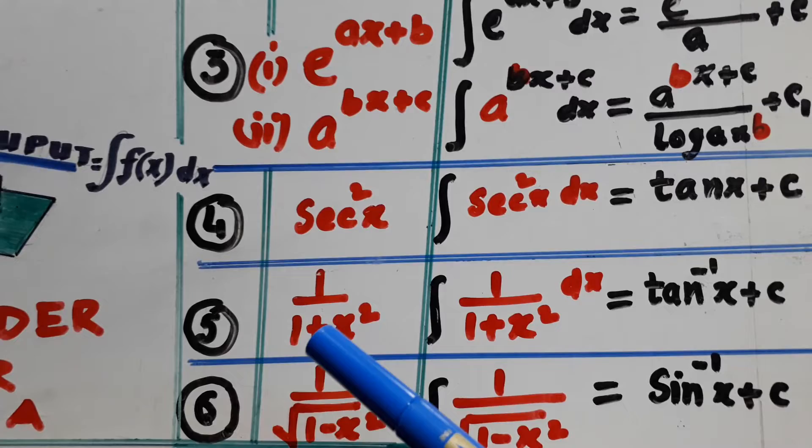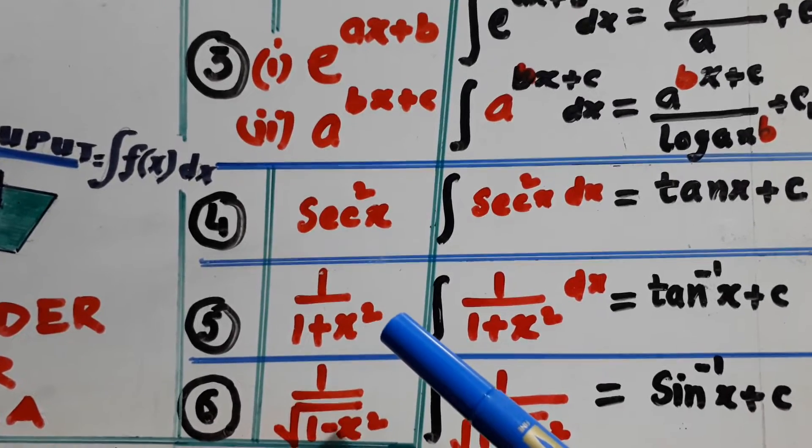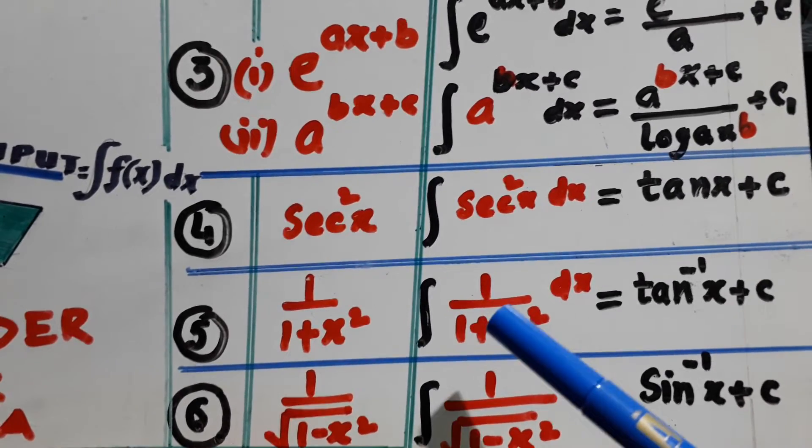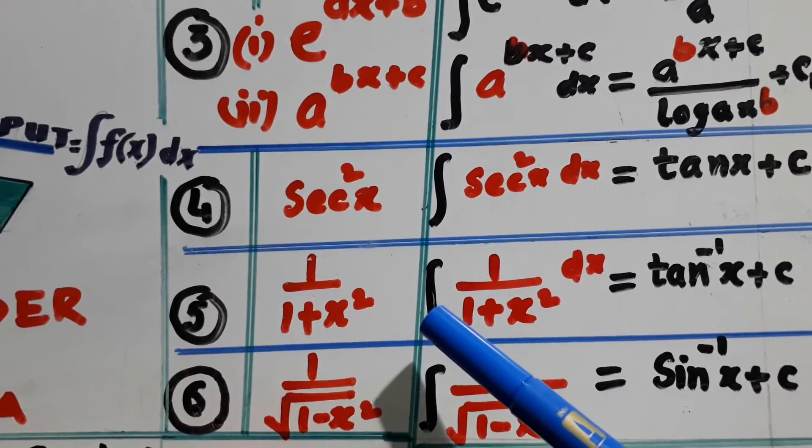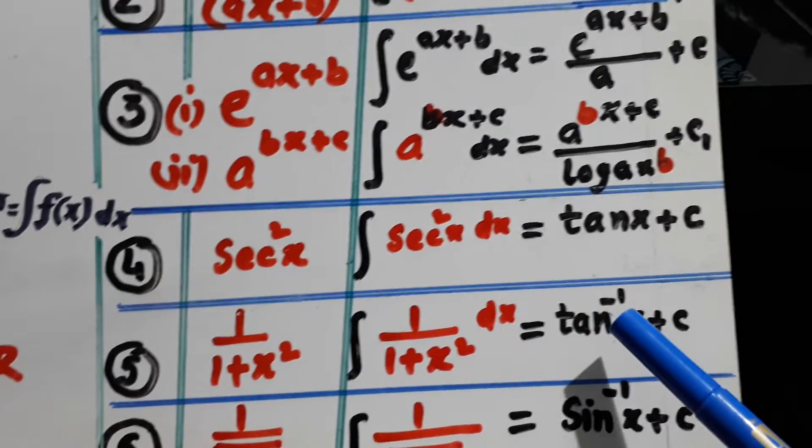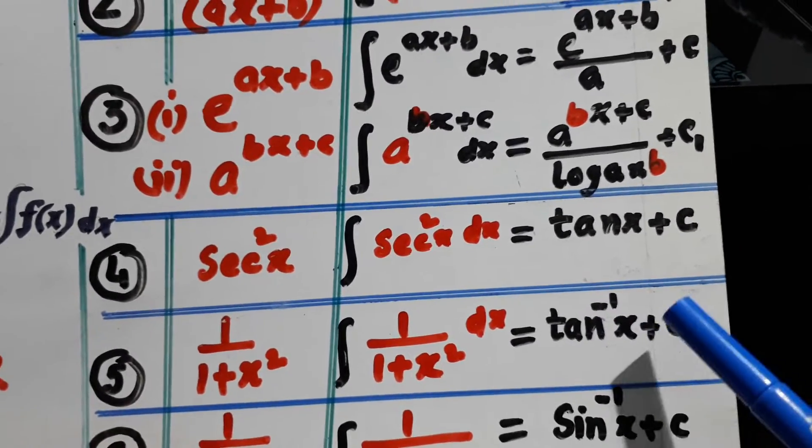Fifth one: 1 over (1+x²) goes into the machine, that is the integration machine, and it becomes tan^(-1)x plus c. This is the output.